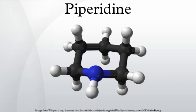A significant industrial application of piperidine is for the production of dipiperidyl tetrasulfide, which is used as a rubber vulcanization accelerator. Piperidine and its derivatives are ubiquitous building blocks in the synthesis of pharmaceuticals and fine chemicals.